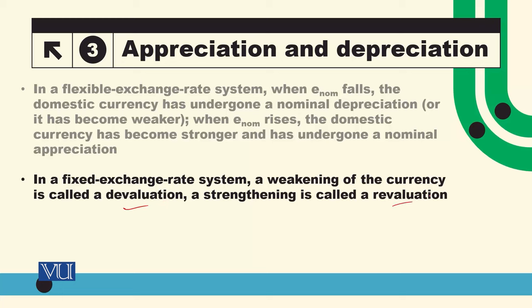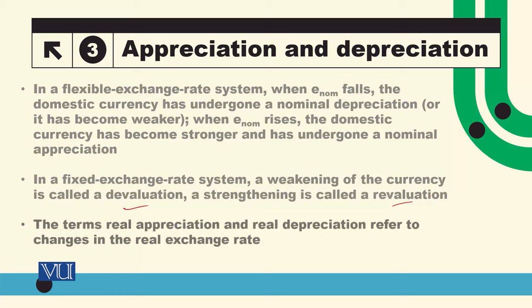To clarify: in a flexible exchange rate system, a fall in the exchange rate is called depreciation and a rise is called appreciation. In a fixed exchange rate system, a fall is called devaluation and a rise is called revaluation. The terms real appreciation and real depreciation refer to changes in the real exchange rate.